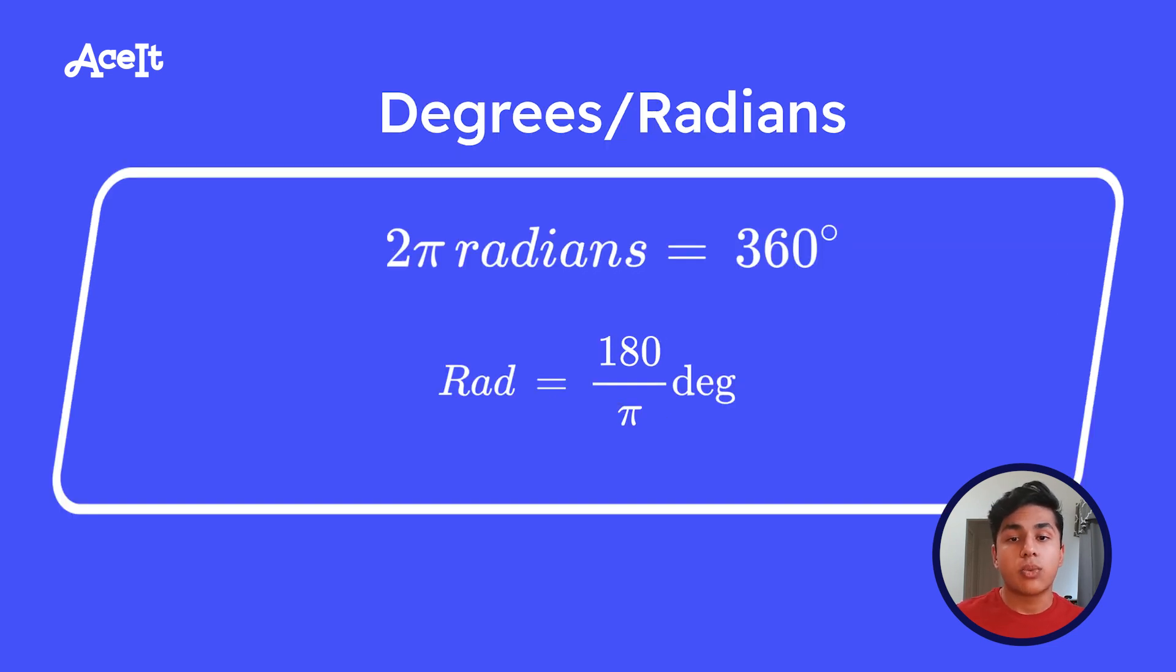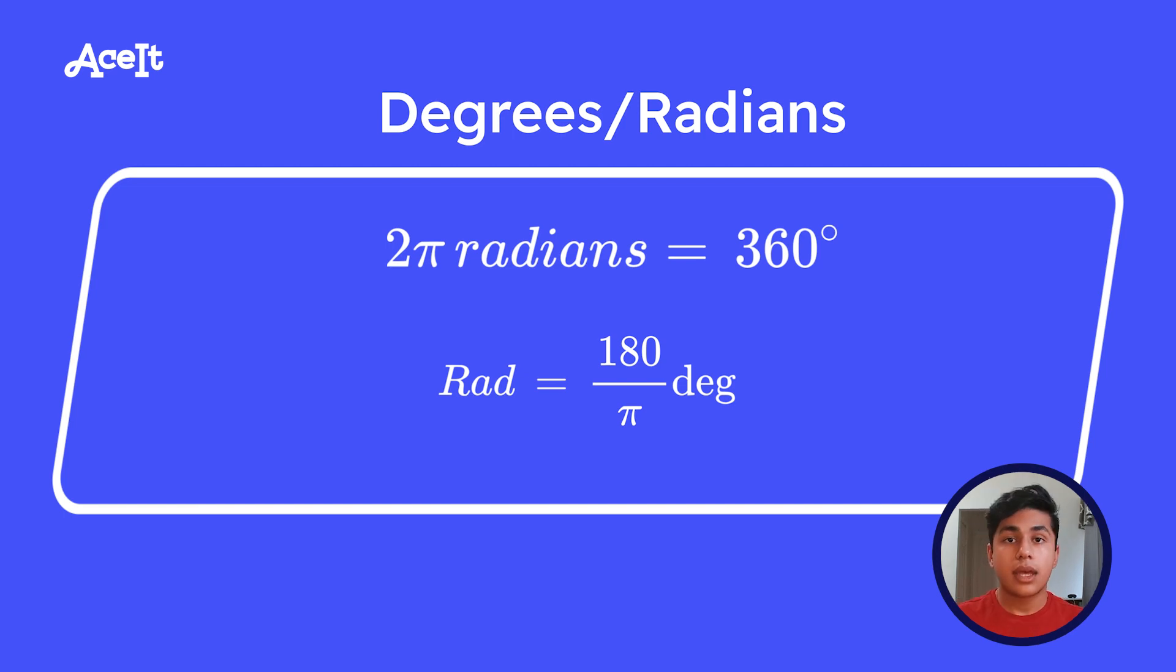The last two equations work if the problem we're working with is in degrees. On the SAT, the most common measurement of angles will be in degrees, but sometimes it's measured in what's known as radians. A radian is a unit of measurement for angles whose arc length is equal to the radius. You can also convert between degrees and radians, where 2π radians is equal to 360 degrees. So that means 1 radian is equal to 180 over π.